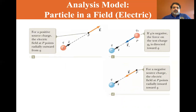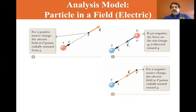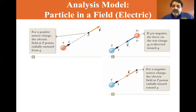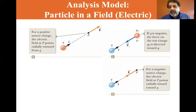For a positive source charge, the electric field at point P points radially outward from q. If q is negative, the force on the test charge is directed toward q. For a negative source charge, the electric field at P points radially inward toward q. We'll see this more clearly when we get to electric field lines.